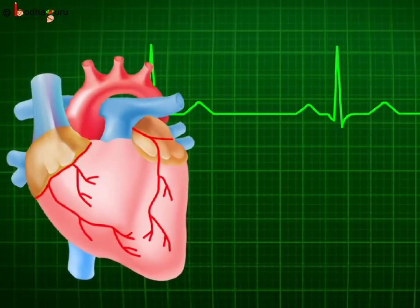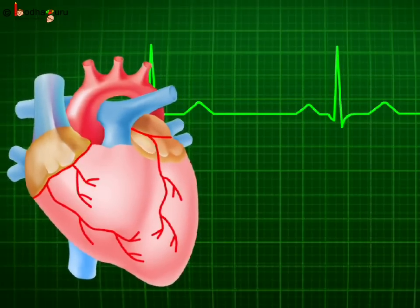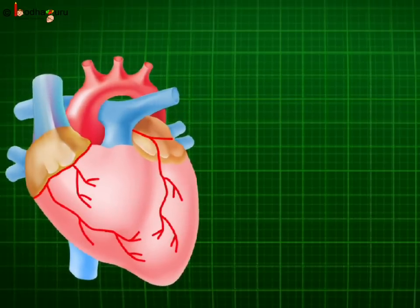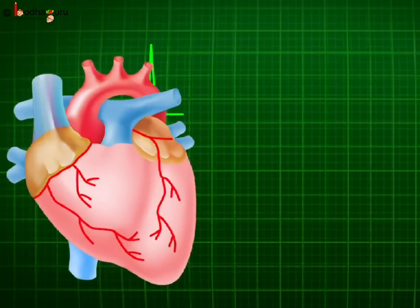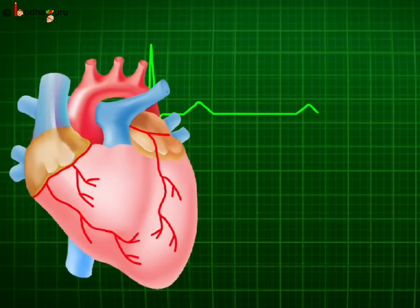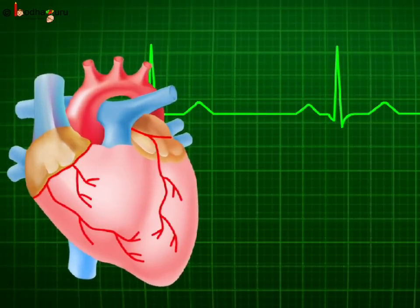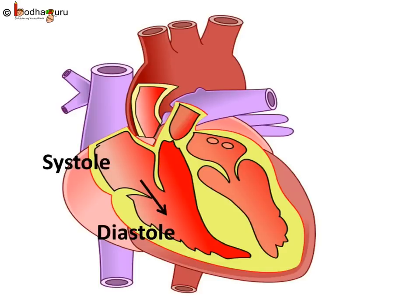So, a cardiac cycle includes the systole and diastole phases of the atria and ventricles, normally completed in approximately 0.8 seconds. Remember, diastole is the part of the cardiac cycle when the heart refills with blood following the systole phase, that is, contraction.